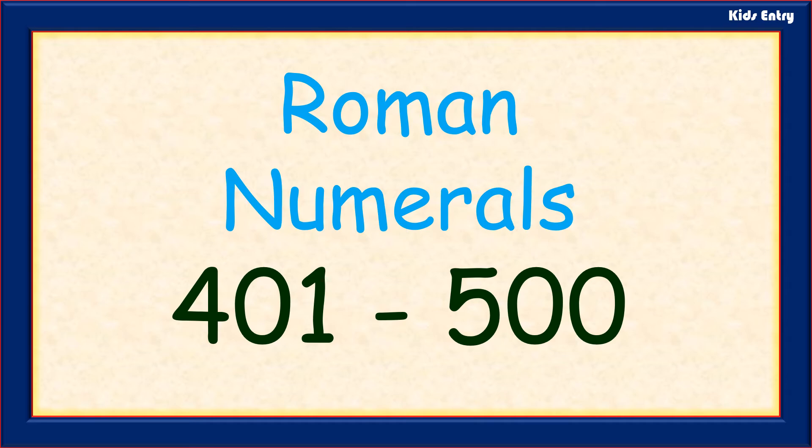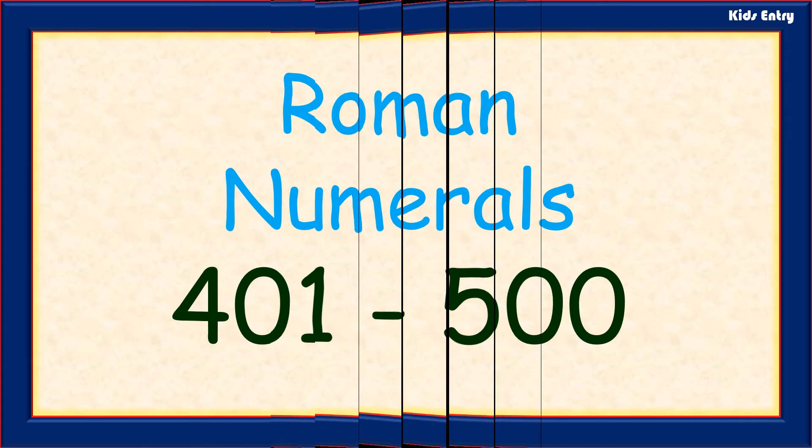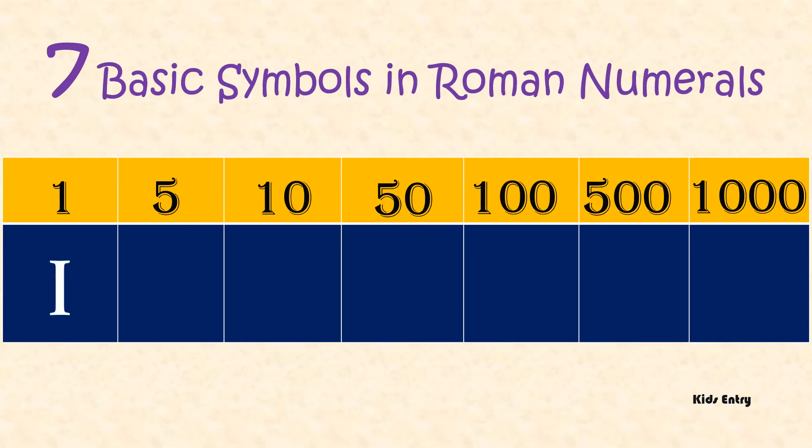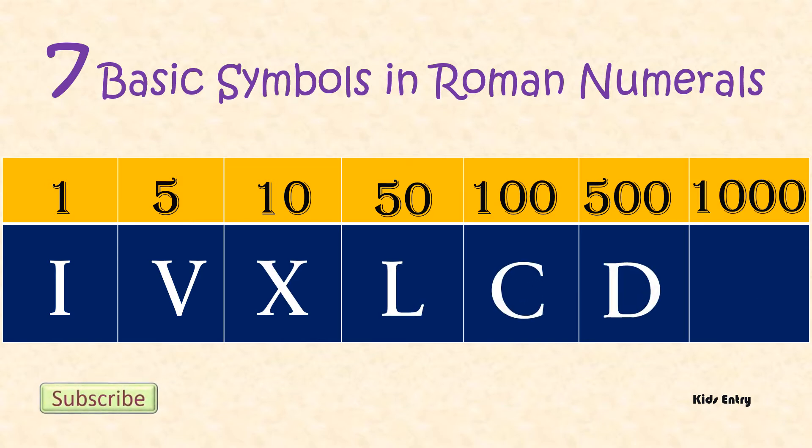Roman numerals from 401 to 500. The Roman numeral system has seven basic symbols represented by the following letters, but there is no symbol to represent zero.